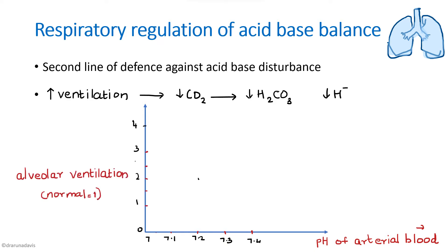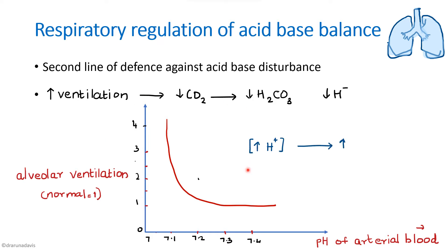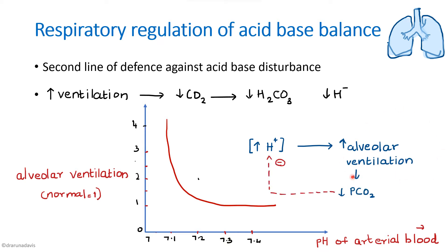A second graph shows the x-axis as arterial blood pH and the y-axis as alveolar ventilation. If pH moves toward the acidic side, ventilation will increase so that pH can be brought back to normal. The lungs regulate acid-base balance mainly by regulating the rate of ventilation. Increased alveolar ventilation decreases partial pressure of CO2, which in turn brings pH back to normal.